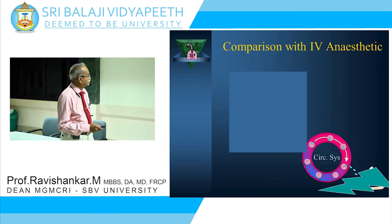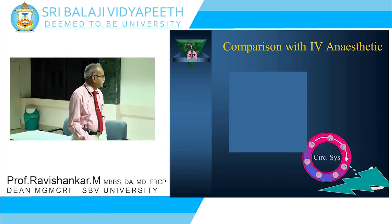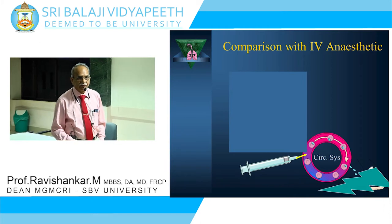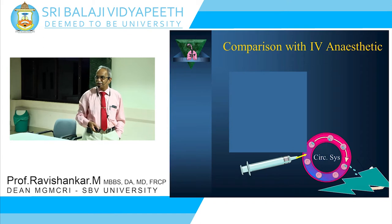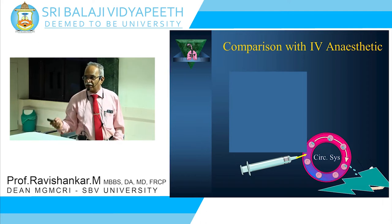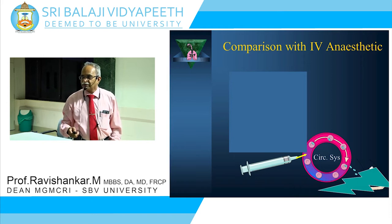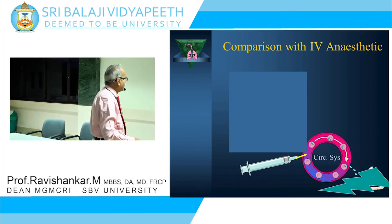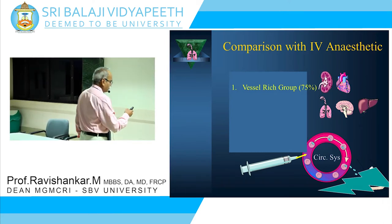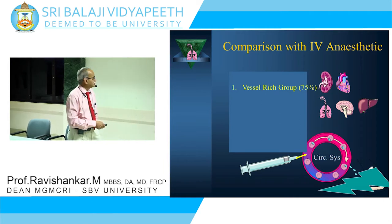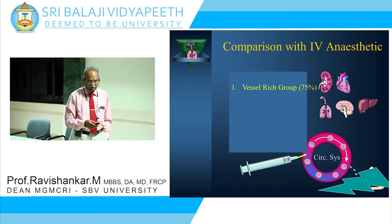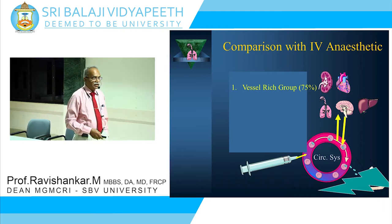If you take an IV anesthetic, you take it in a syringe and inject it into a vein. It goes into the blood and gets distributed. According to blood circulation, 75% goes to the vessel-rich group — the organs which are vessel-rich: kidney, lung, heart, brain, and liver. So 75% of the blood goes there and the drug distributes into those organs.